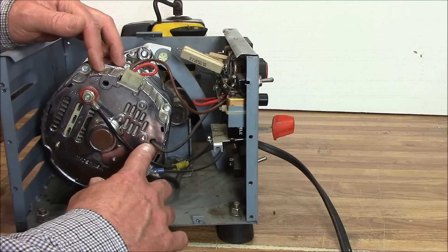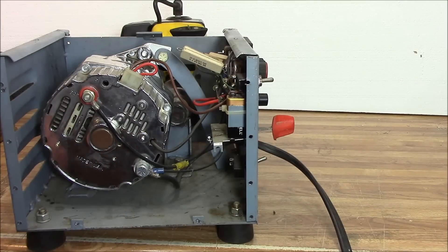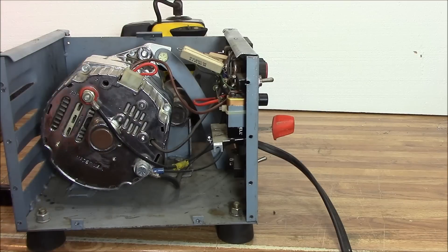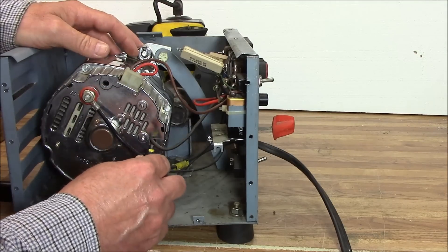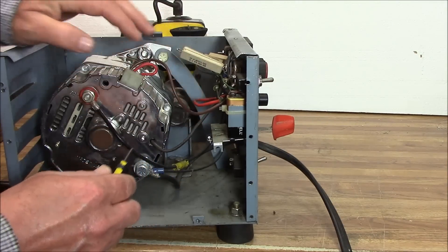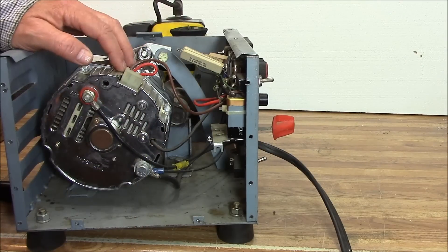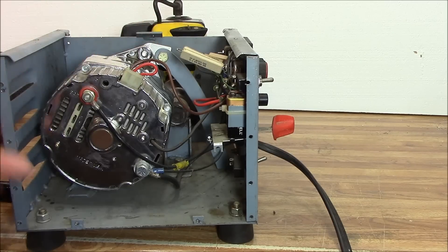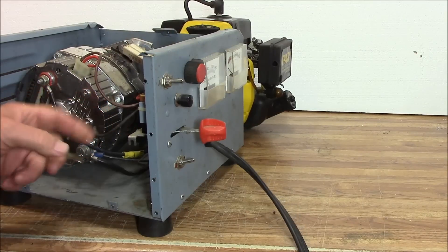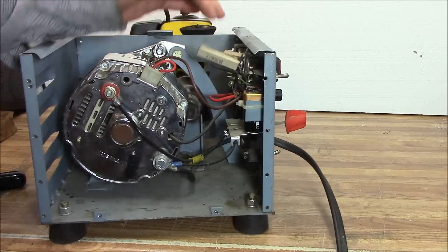If you shine a light in on the D hole on a GM 10si or any of the SI series that have this D hole, you'll see a little tab of metal sticking down. If you take a screwdriver and push it inside of here, and touch it on that tab, and then ground it to the case, that bypasses the voltage regulator and makes the alternator run full blast. That's what I've done with this rheostat setup. I've actually ran a wire in here connecting to that little tab of metal.